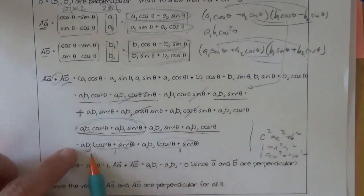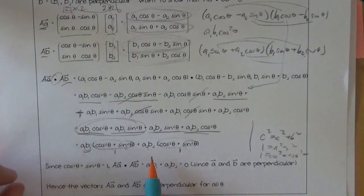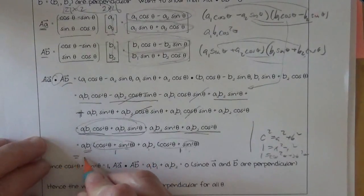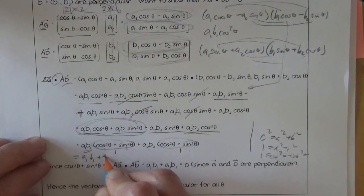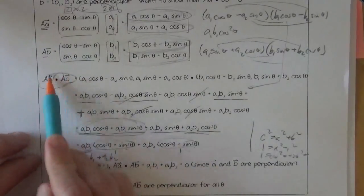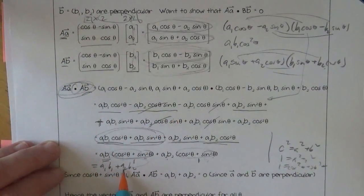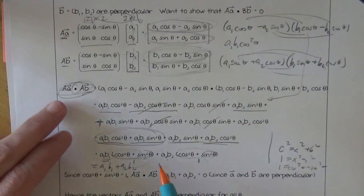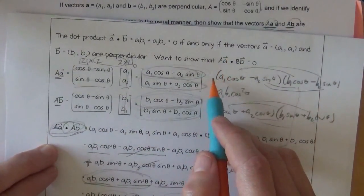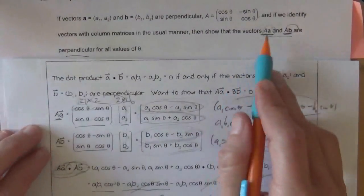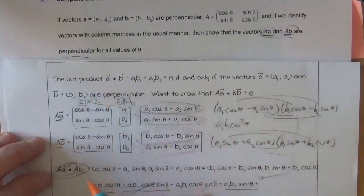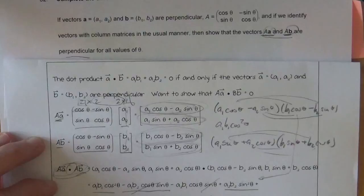So we got the A1 B1 plus A2 B2, and that's what this dot product equals. And it's like, well, we were hoping that it equaled 0, right? That was the goal, to show that these vectors are perpendicular, and therefore their dot product is 0. And we got this mess here.